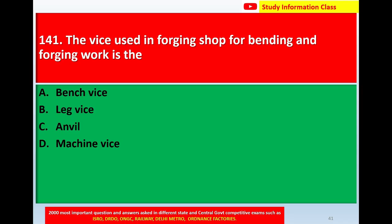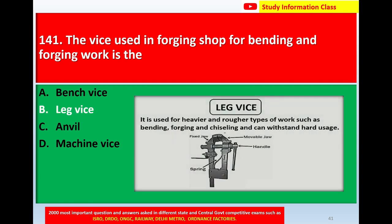Question number 141: The vice used in a forging shop for bending and forging work. Option A: bench vice, Option B: leg vice, Option C: anvil, Option D: machine vice. The correct answer is Option B, leg vice. Here is the diagram of leg vice — it is used for heavier and rougher type of work such as bending, forging, and chiseling, and can withstand hard usage.